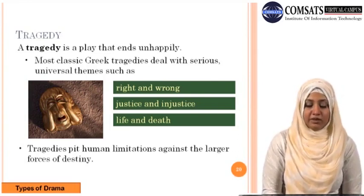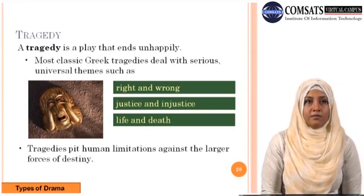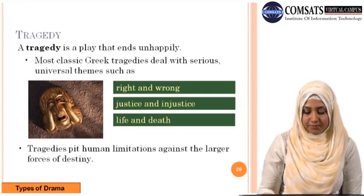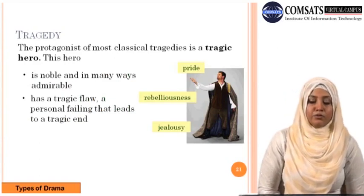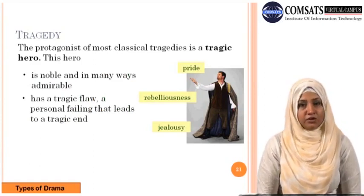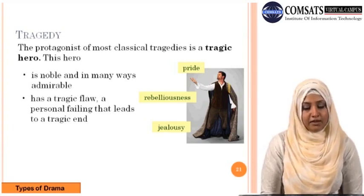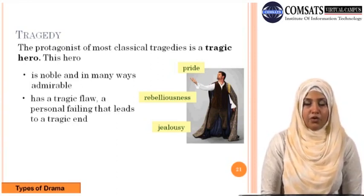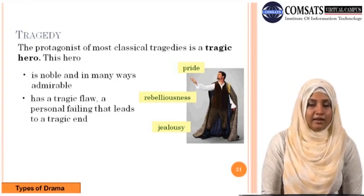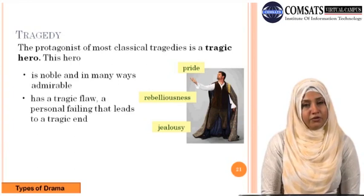Tragedies basically pit human limitations against the larger forces of destiny. The protagonist of most classical tragedies is a tragic hero — noble and admirable, not a common person, possessing all admirable traits. However, this hero has a tragic flaw, which can be pride, rebelliousness, or jealousy — anything not agreeable or admirable by society. It is a personal failing that leads to the tragic end of the drama.